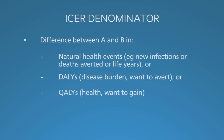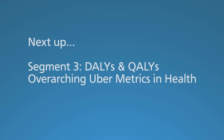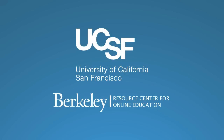Indeed, DALYs and QALYs become essential. When we put the numerator and denominator together, we get the Incremental Cost-Effectiveness Ratio: the difference in net costs divided by DALYs averted. Note that the order of subtraction in the numerator and the denominator is different, because the numerator is added costs but the denominator is averted DALYs. In Segment 3, we take a closer look at DALYs and QALYs — overarching uber-metrics in health.